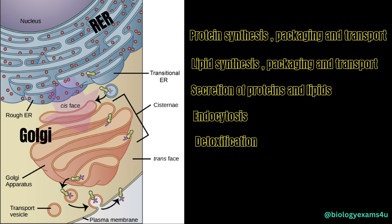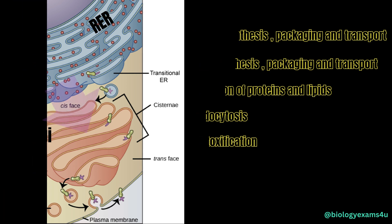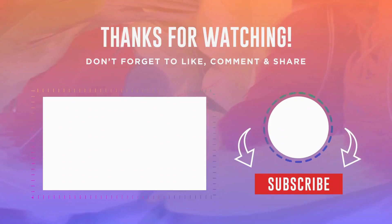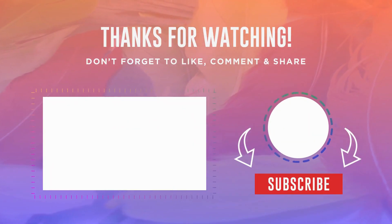Let me summarize. The endomembrane system is a complex network of organelles and membranes in eukaryotic cells that works together in tandem to produce, modify, package, and transport lipids and proteins to different locations within the cell or outside of the cell. Hope you are clear with the endomembrane system. Take care.